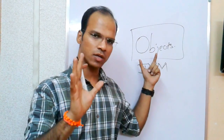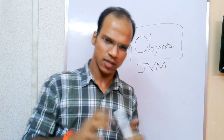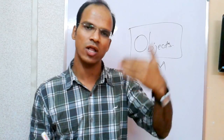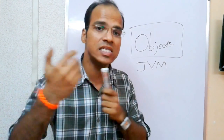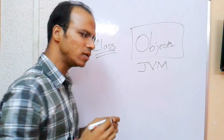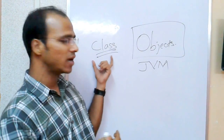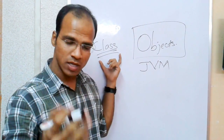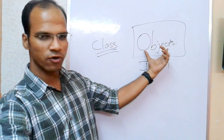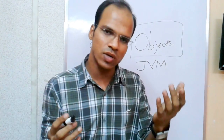If I want any object, the JVM will provide it. I require an object, JVM says yes, but the only thing is you must give me a design for which you require the object. That means I have to provide a design, and that design is provided using a class. So you require an object to work, but to create an object you require a design, and that design is the class.